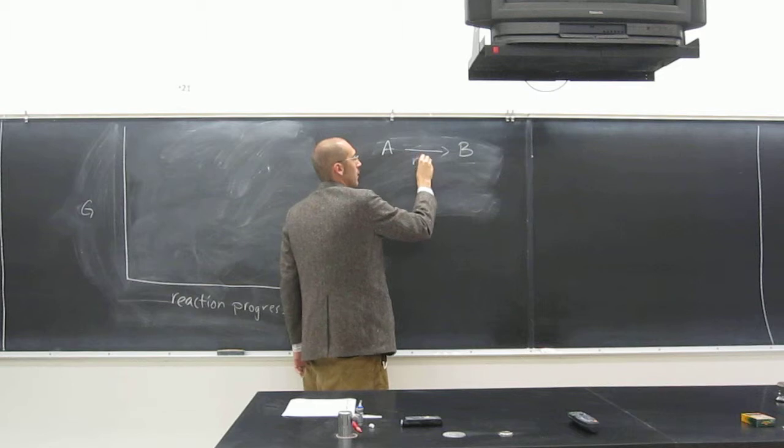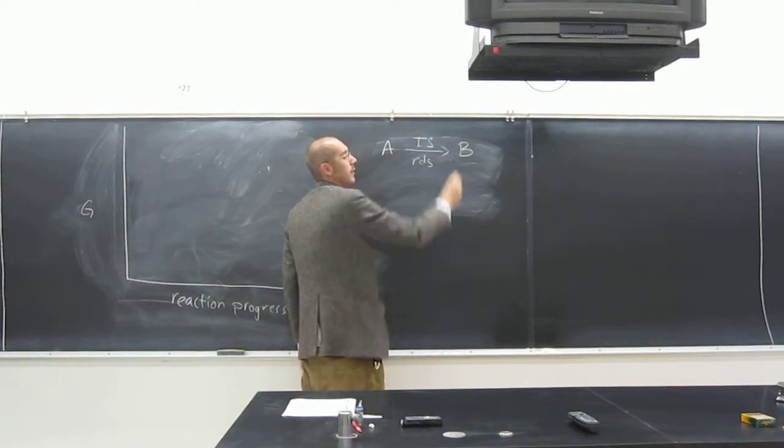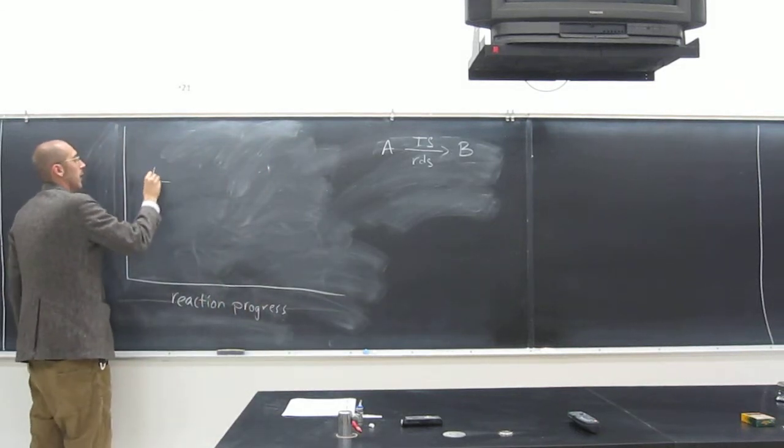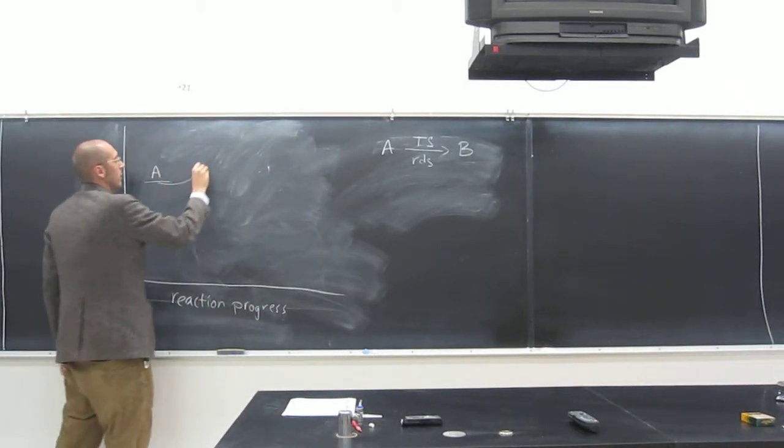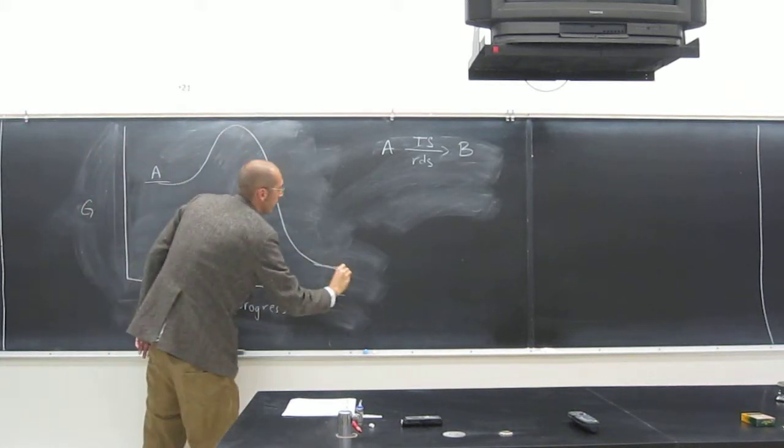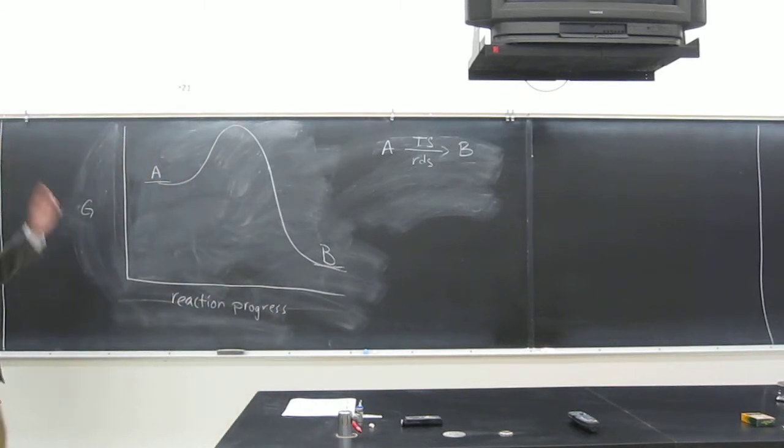So of course this is the rate determining step, right? There's a transition state there. So let's just draw that. And this isn't something that you haven't seen before, but we're going to put in a new kind of twist.